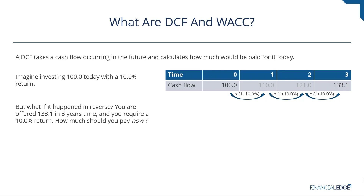But what if it happens in reverse? You are offered $133.1 in three years' time and you require a 10% return. How much should you pay now? You have to start at year three and imagine the cash flow coming to you — $133.1 — but that has to represent three years' worth of a 10% return. So how do I get back to the amount I should invest today? I need to divide by one plus my required return, or divide by 1.1 in this example.